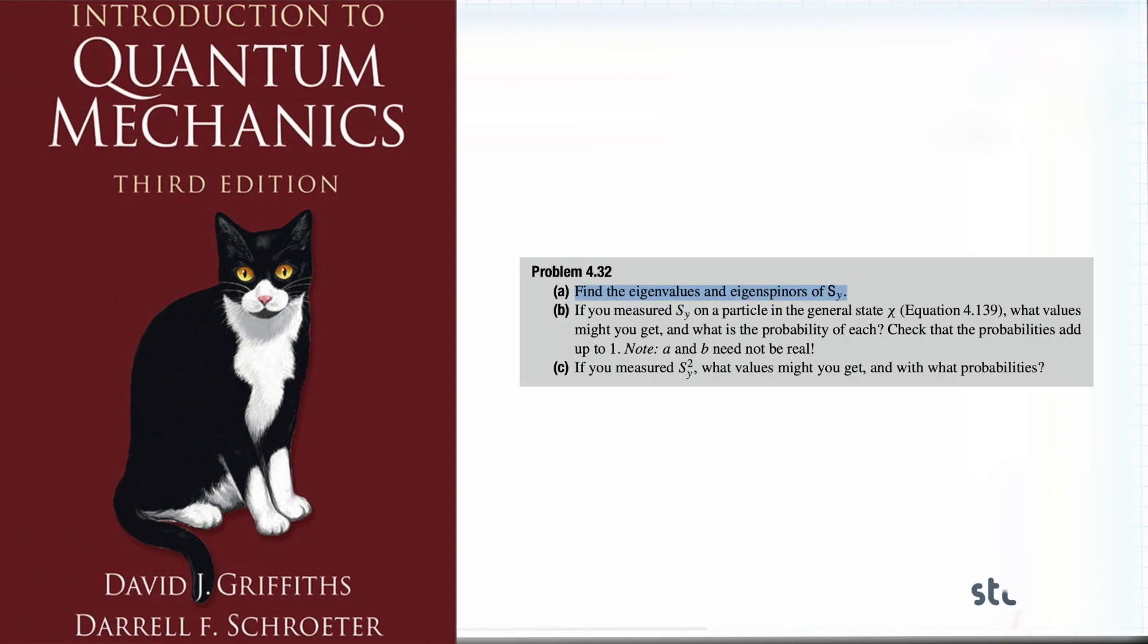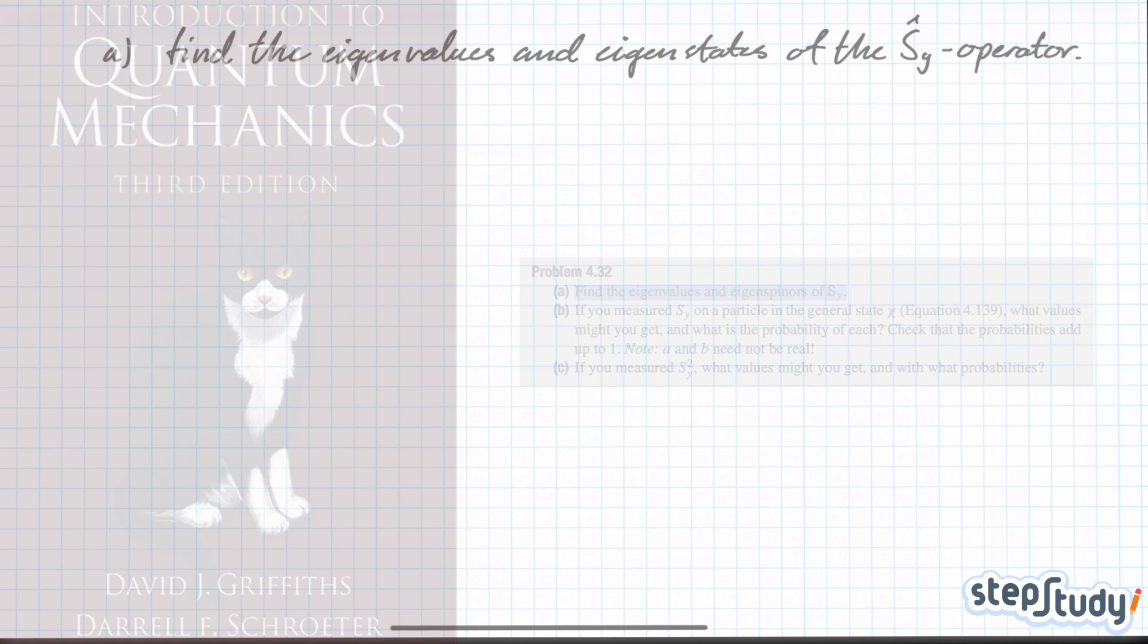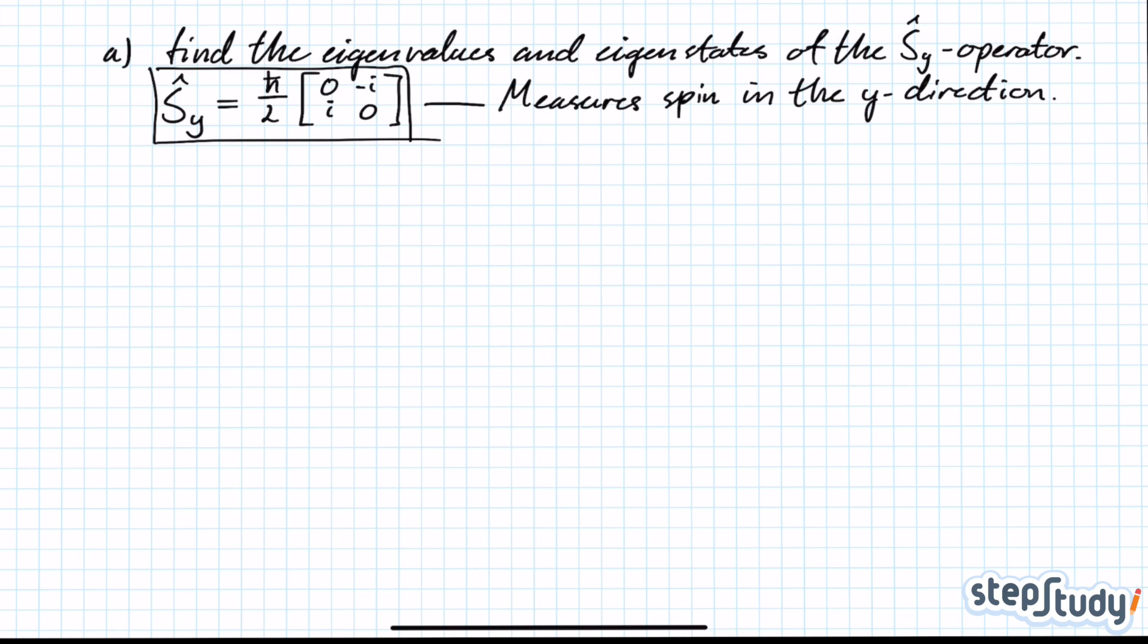We're solving problem 432a in Griffith's introduction to quantum mechanics. We need to find the eigenvalues and eigenstates of a certain operator. The operator is Sy, it measures the spin in the y-direction, and when you measure spin, you can only get up or down, that's a fundamental fact of quantum mechanics.